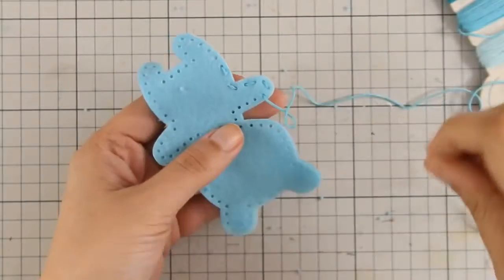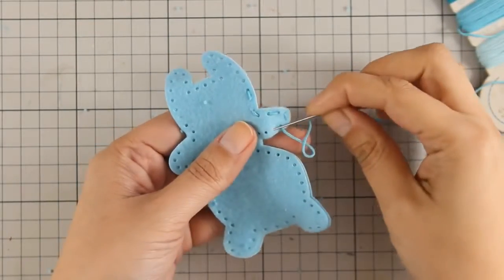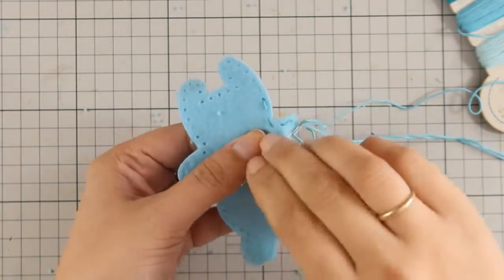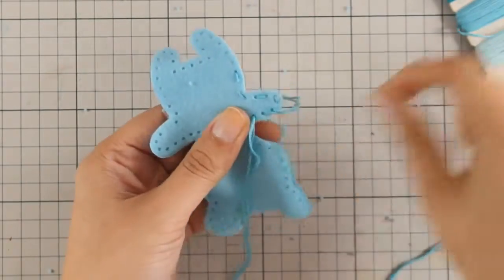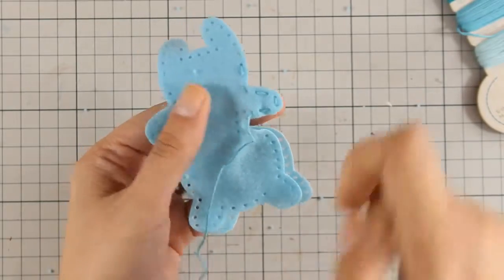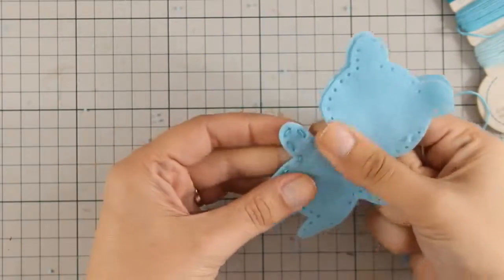You can leave it as it is with all those gaps in between, but if you don't like that look you can always go all around the design with your needle and thread and fill in the rest of the gaps, which is actually what I will be doing.